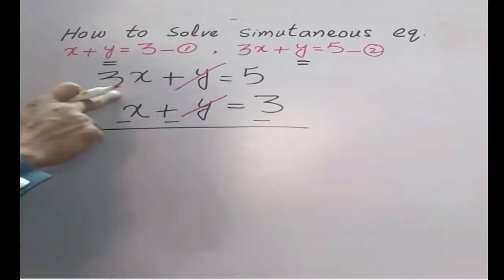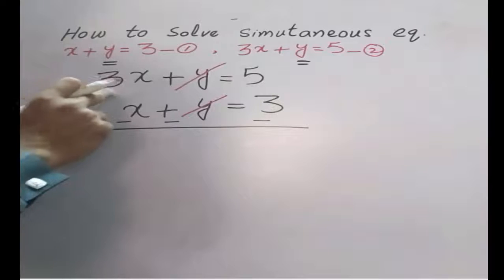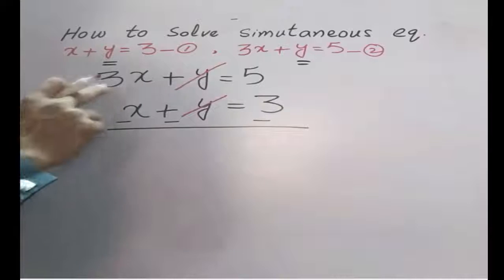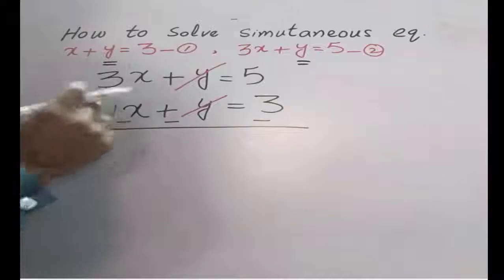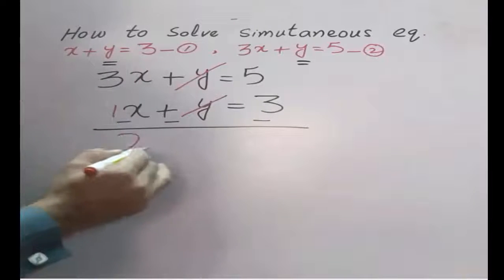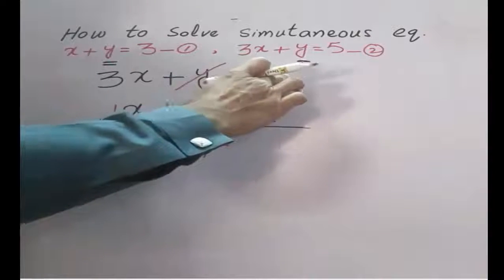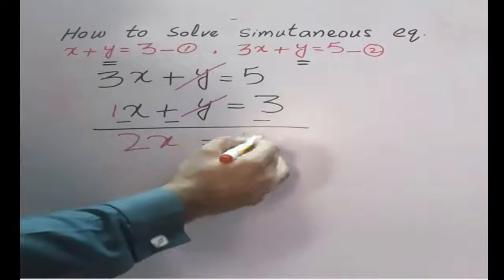After that, coefficient of x is 3 and coefficient of this x is 1. So 3 minus 1 equals 2x. Now 5 minus 3 equals 2.